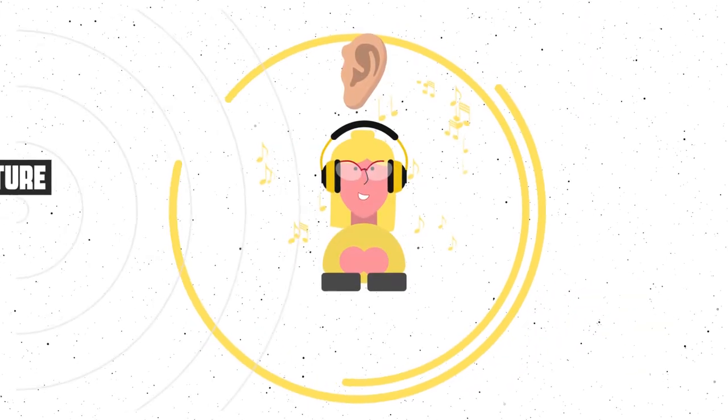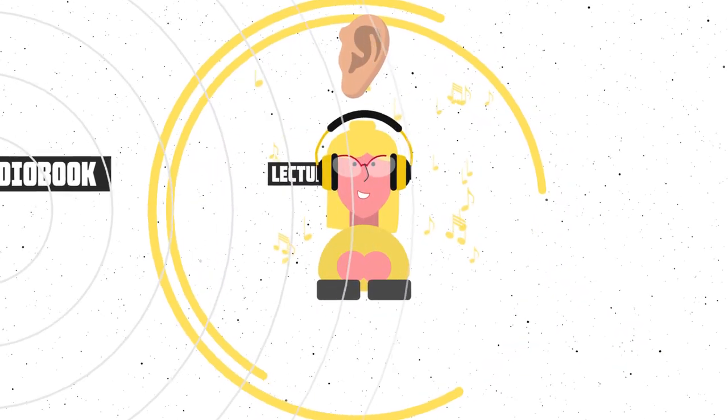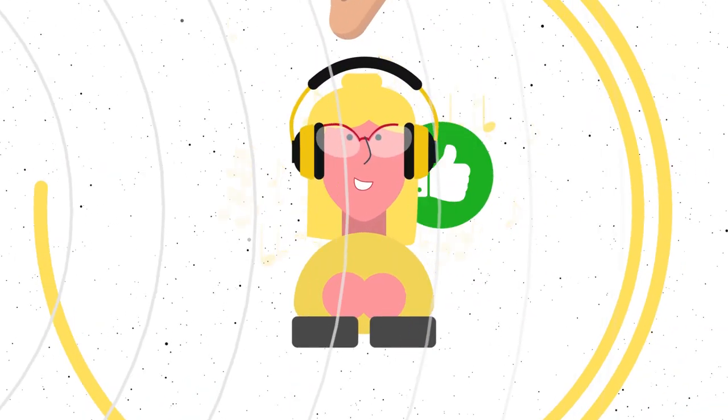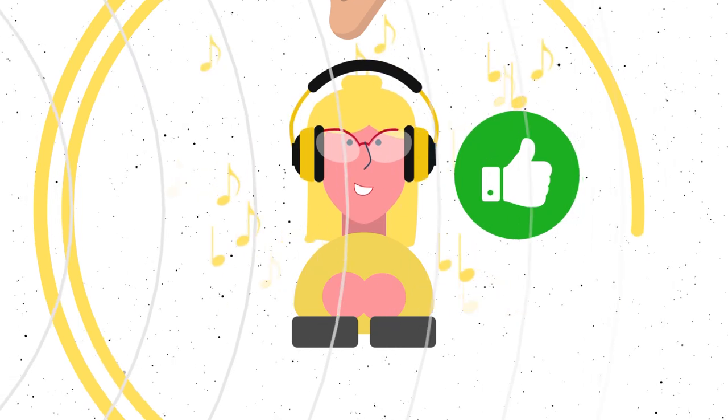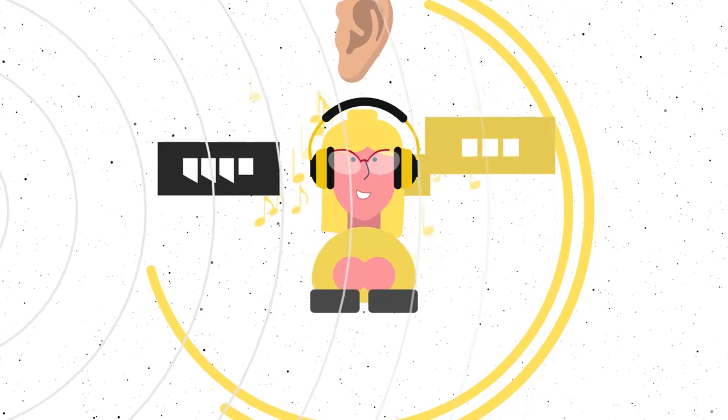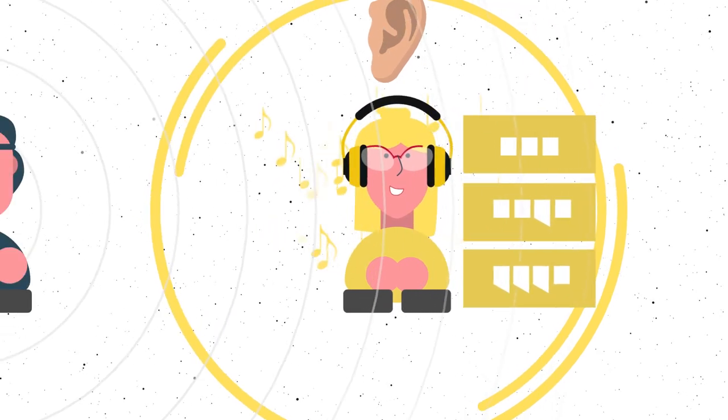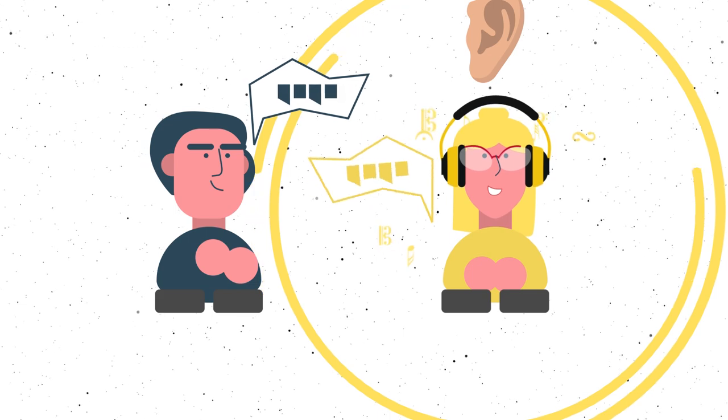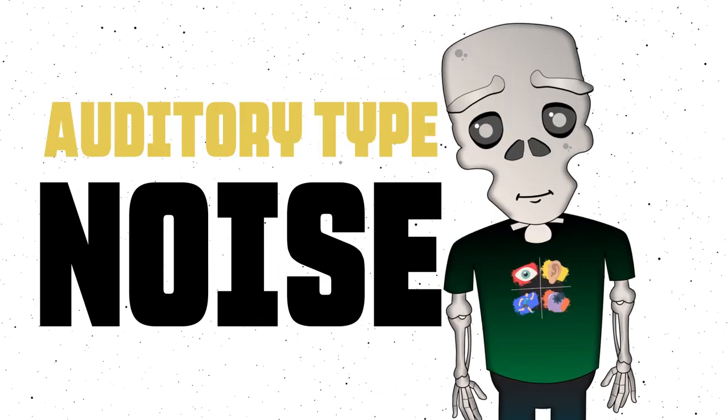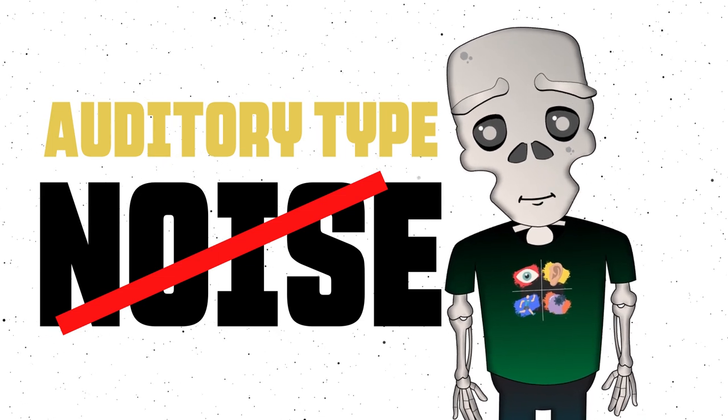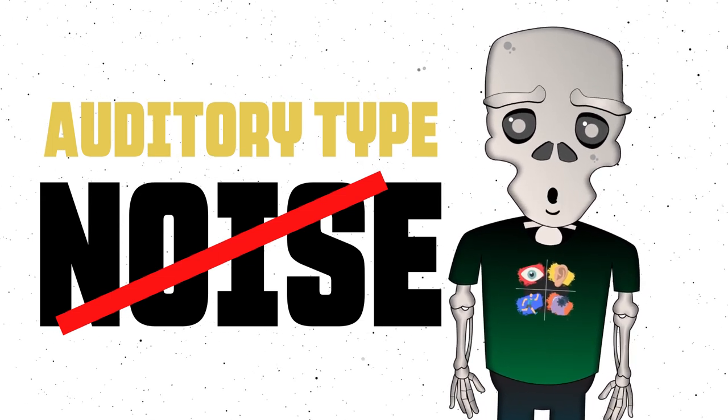They prefer listening to a lecture or an audiobook. The most important thing is that the speaker is a professional, and then the content will be understood without a doubt. Moreover, auditory types will be able to recite the lecturer's words very accurately. Same thing with discussions. They are great at absorbing information through conversations. But the noisy environment is their kryptonite. Auditory people can easily be distracted from work by background noise.